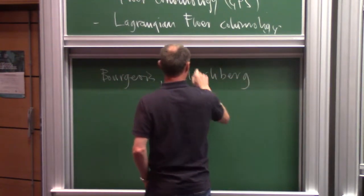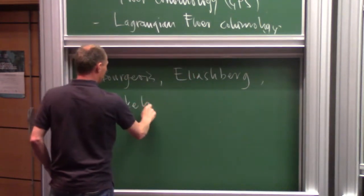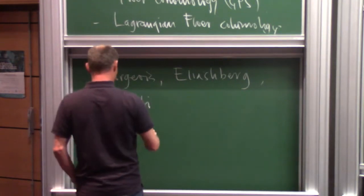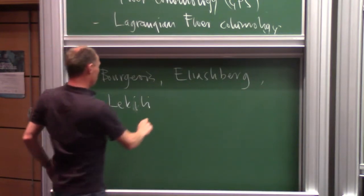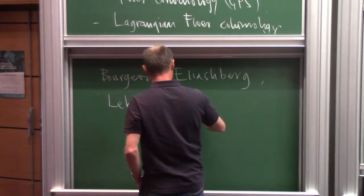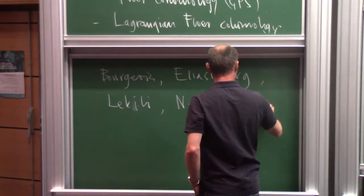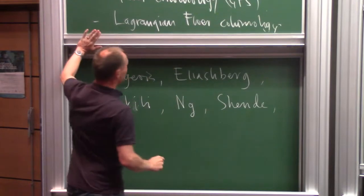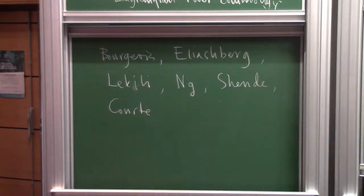It started with joint work with Bourgeois, Ekholm, and Eliashberg, and then the next step with stops involved Lenny Ng for computations, and then Ganatra, and Sylvain Courte. It's a long list of people and papers — some things are proved, some other things are being proved — and I'll be happy to answer questions after the talk.